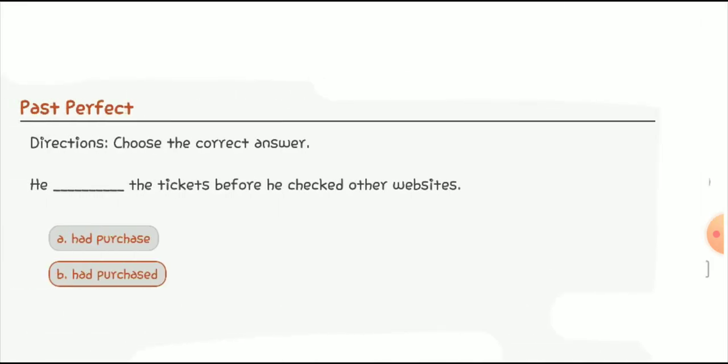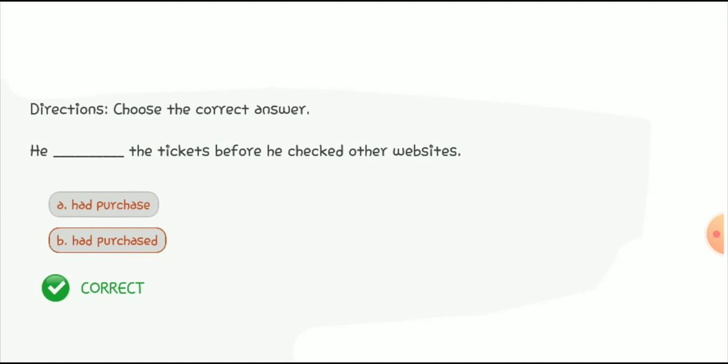Quiz number three: 'He ___ the tickets before he checked other websites.' The options are compared and we choose 'he had purchased,' because 'had' is taken from the formula and 'purchased' is the third form of verb. So 'had purchased' is the correct option. 'He had purchased the tickets before he checked other websites.'